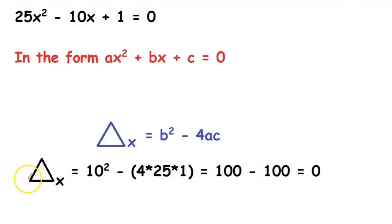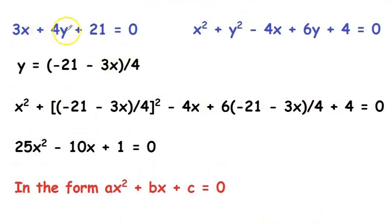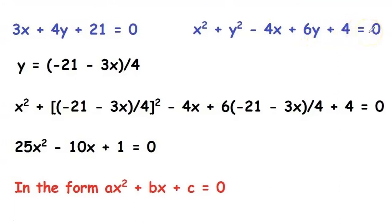Since Δ = 0, we have only one value for x. So the line will touch the circle only once, which means that the line 3x + 4y + 21 = 0 lies on the circumference of the circle x² + y² − 4x + 6y + 4 = 0. That's how you find the position of a line using the discriminant.